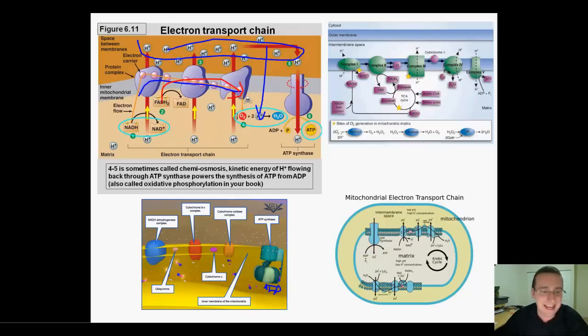Since you have 10 NADHs during the whole process and two FADH2s, you're going to pump in three protons for each NADH and two for each FADH2. That causes the ATP synthetase to spin and create a total of 30 ATPs from the NADHs and four ATPs from the FADH2s.